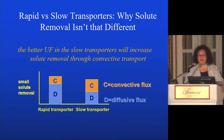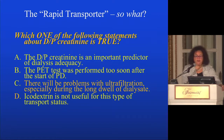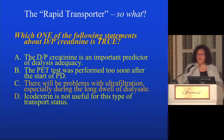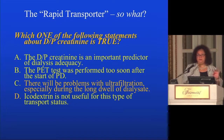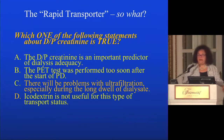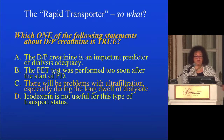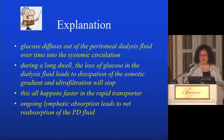Coming back to the original question: C is the best answer. D/P creatinine is not a predictor of adequacy of dialysis — it depends how much dialysis you give. The PET test: people advise waiting one month after catheter insertion because the insertion itself can cause temporary inflammation making the PET inaccurate. In this case it was done two months later, which is fine. And icodextrin can be useful for this type of transport status.